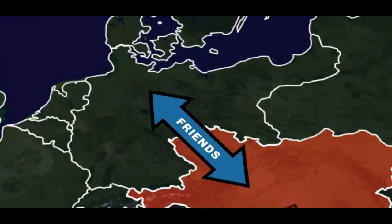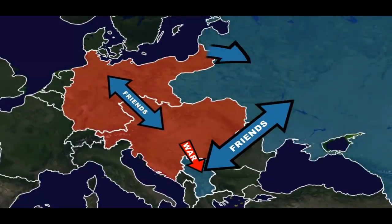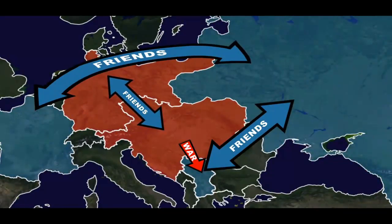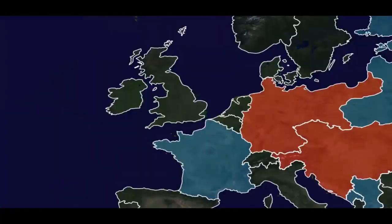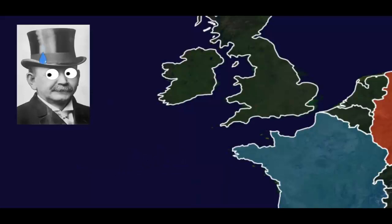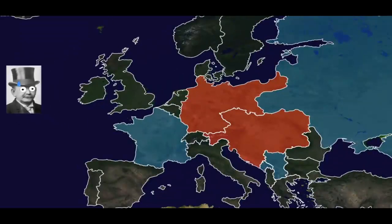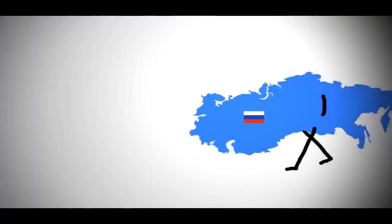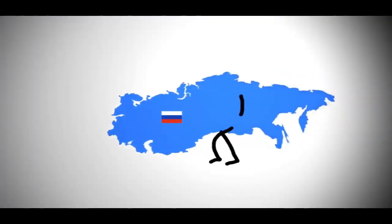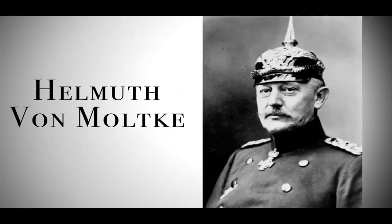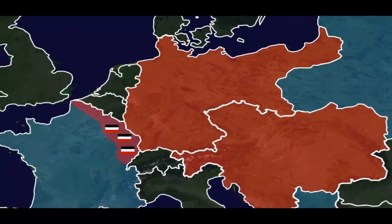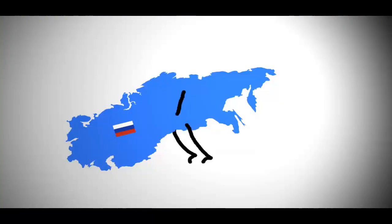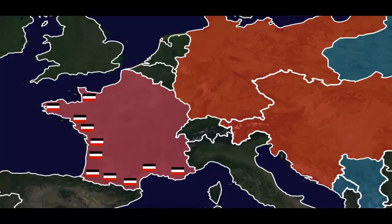Austria-Hungary and Germany were allied, while Serbia was protected by Russia, who was friends with France — so they all declared war on each other. Montenegro joined in too. Britain initially stayed out, which suited Germany's plan perfectly. Germany knew Russia was so large it would take time to mobilize, so Germany would send all its troops into France at lightning speed, defeat France, then move troops east to defeat Russia.